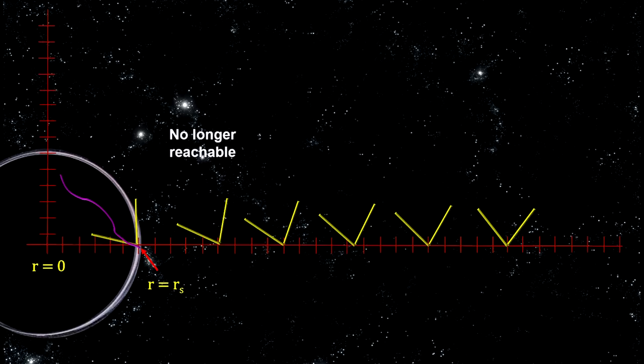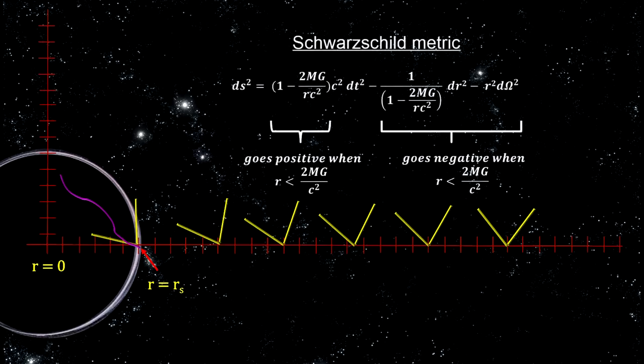No possible world line gets you out. All remaining world lines lead to the singularity. Distance from the singularity decreases inside the black hole's horizon as surely as time increases outside the horizon.